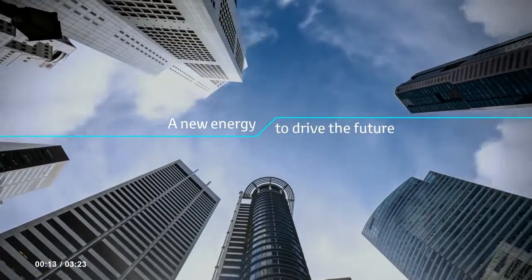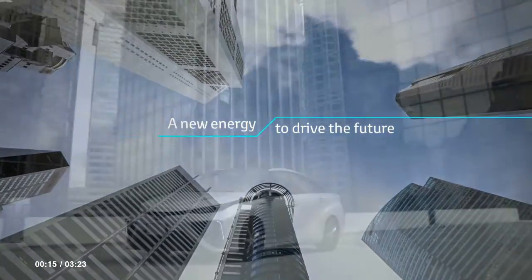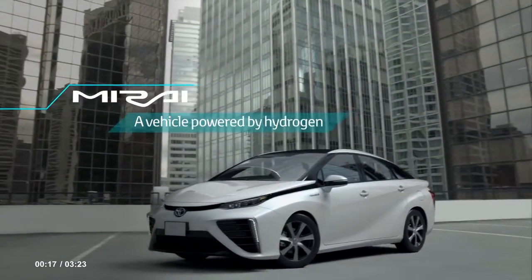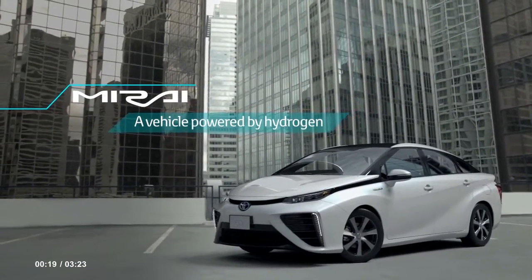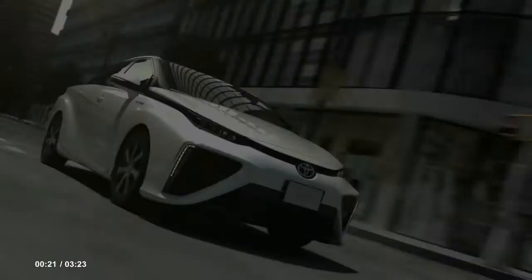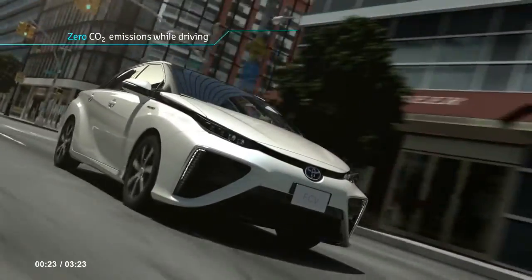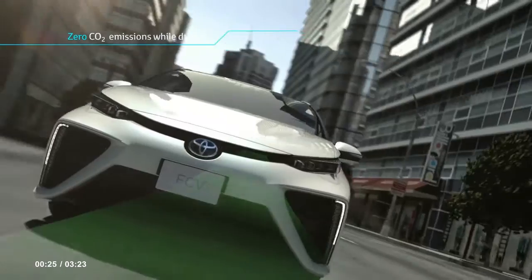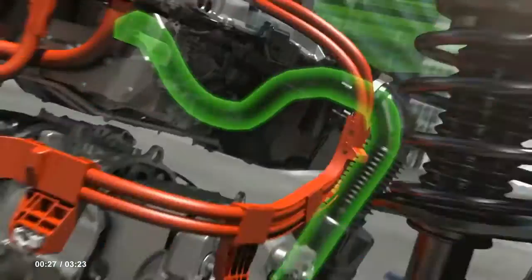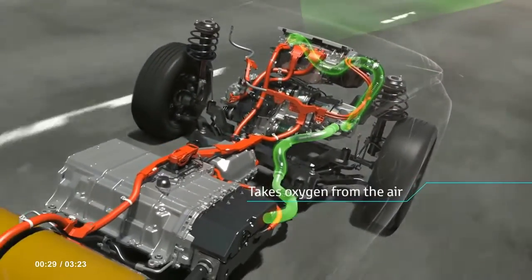Introducing Toyota's revolutionary new fuel cell system for the FCV. The FCV's fuel cell generates power which is created from hydrogen and oxygen. Hydrogen, an alternative fuel for gasoline, is a plentiful, environmentally friendly energy element that is created from a wide range of sources.